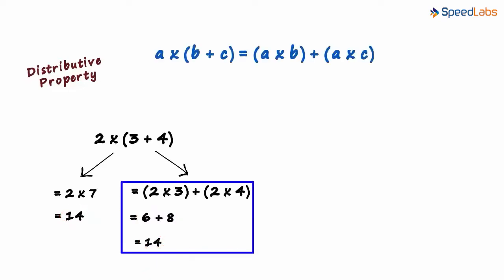Let's focus on the second method. In variable terms, we can write it as A multiplied by B plus C equals A multiplied by B plus A multiplied by C.